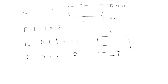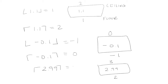Now let's look at 2.99. The ceiling of 2.99 — well, 2.99 is going to be between 2 and 3, so the ceiling will be rounding up to 3. That's another way to think about it. When we're doing the floor and ceiling functions, think about it as rounding either up or down. If we're talking about the ceiling, you want to round up. If you want to talk about the floor, round down.